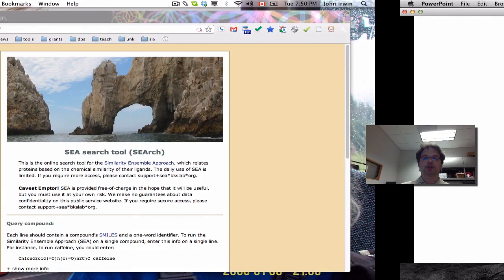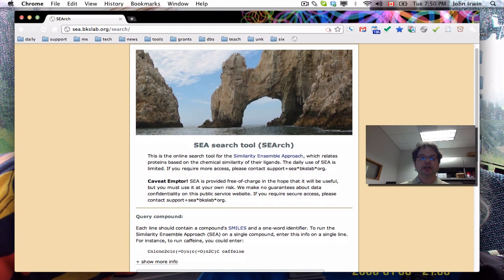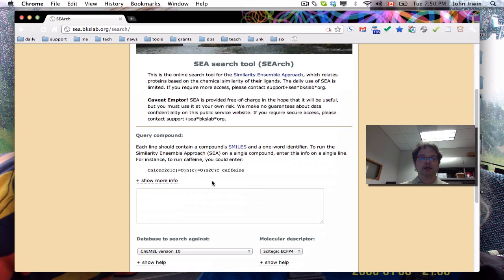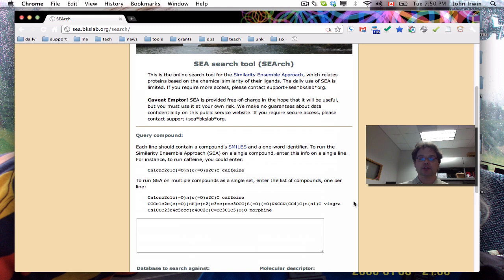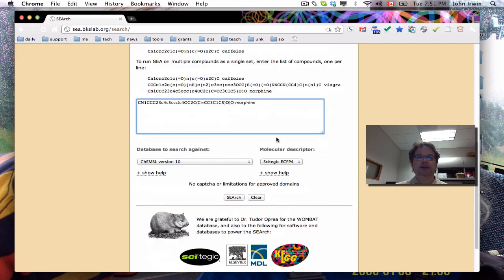So this is the SEA search tool. And so here we are in SEA. And so imagine you want to know the biological target of morphine. Or whatever your compound is, you get the SMILES. You can get this out of eMolecules, out of zinc, out of ChEMBL, out of Wikipedia. There's lots and lots of places where you can get SMILES. Or you can simply draw the molecule.